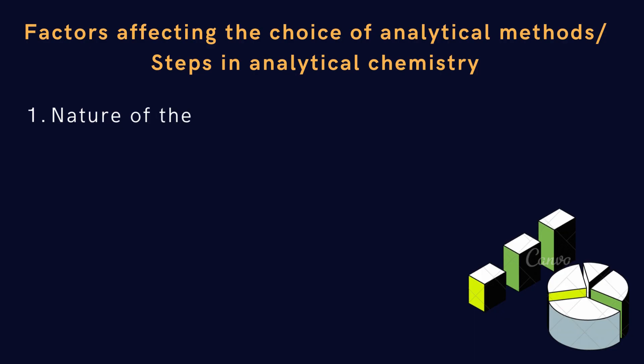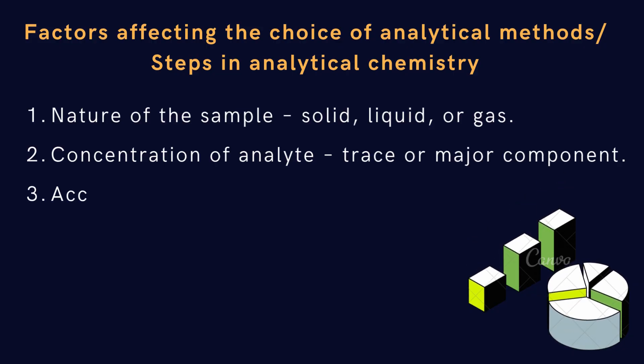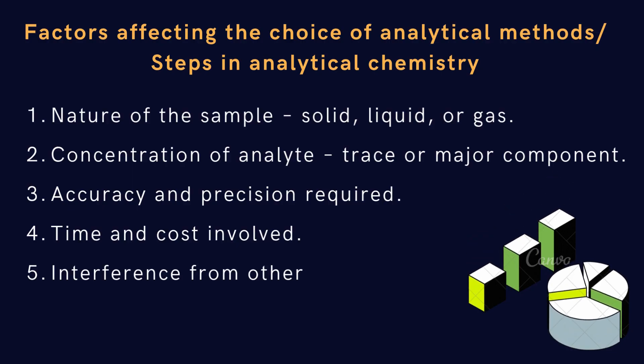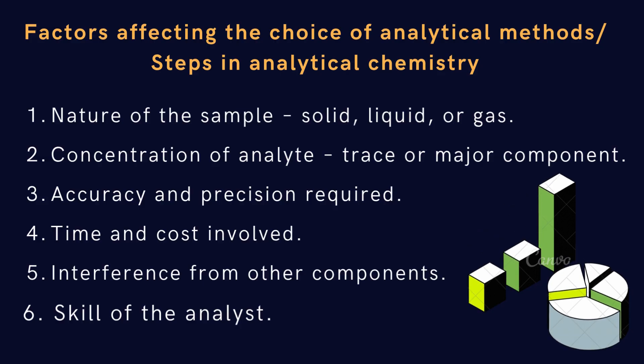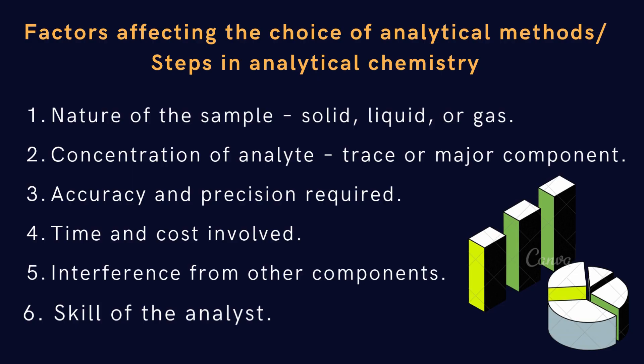Let's discuss the factors affecting the choice of analytical methods or steps in analytical chemistry. First, the nature of the sample, whether it is solid, liquid, or gas, determines the suitable analytical method. Next, the concentration of the analyte plays a role. Trace components require highly sensitive techniques, while major components can be analyzed by simpler methods. The accuracy and precision required also guide the choice. High-precision work needs more advanced instruments and calibration. Time and cost are practical factors. Rapid and economical methods are preferred when resources are limited. Interference from other components in the sample may affect accuracy, so methods with minimal interference are chosen. Finally, the skill of the analyst influences the technique selection. Complex instruments require experienced operators.